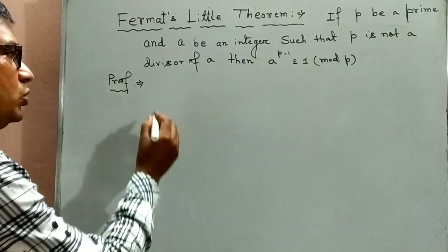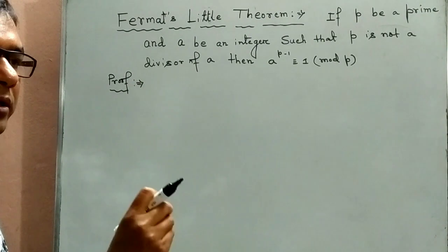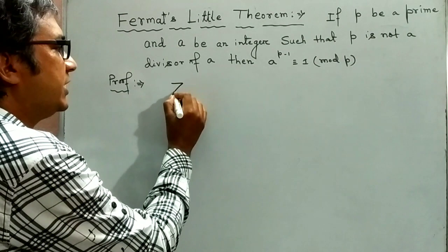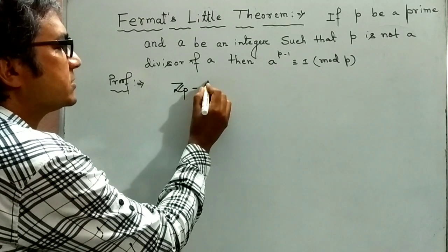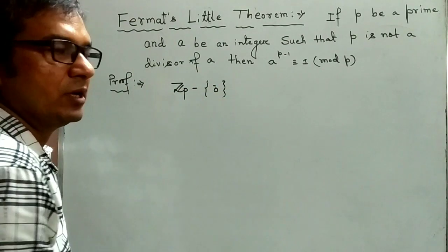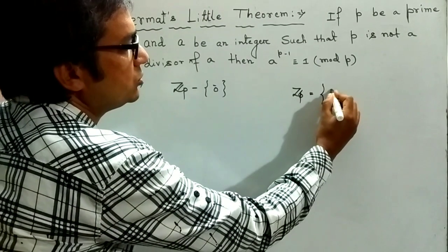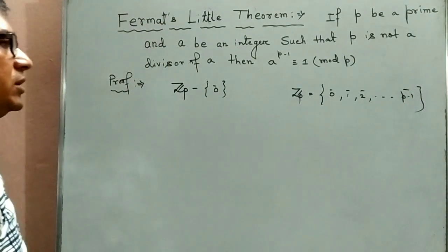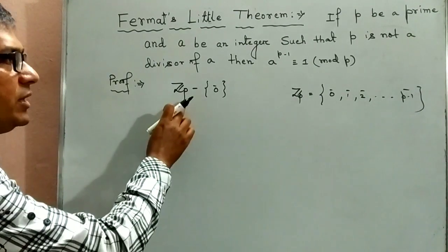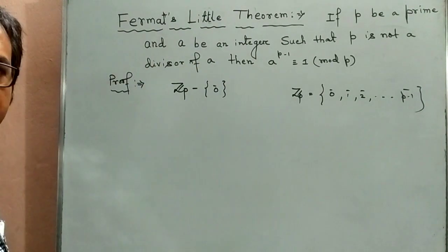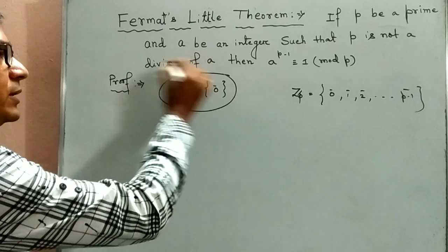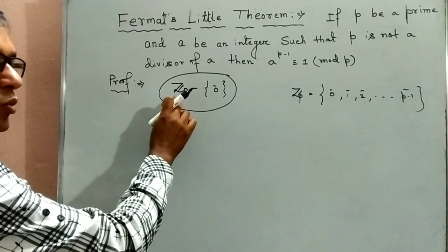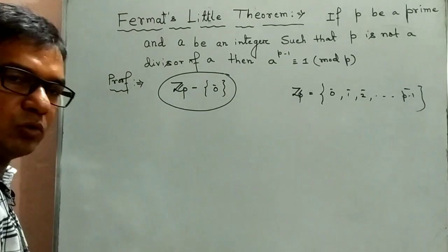So we first consider a very common group. Zp is 0 plus 1 plus 2 plus ... p minus 1. Here p must be prime. Then we all know that if p is prime then Zp without 0 is a group under addition.